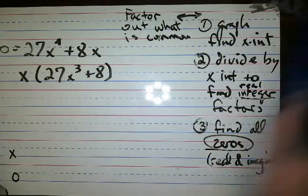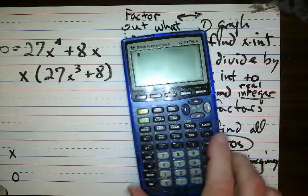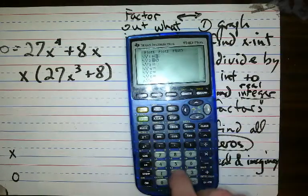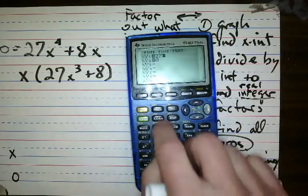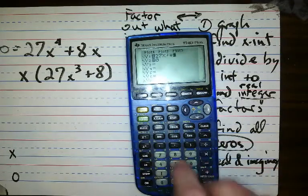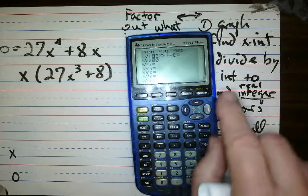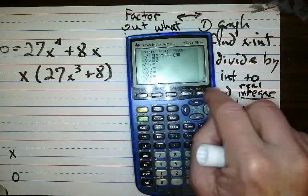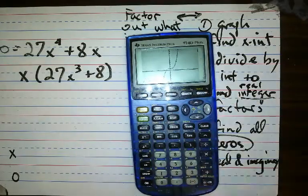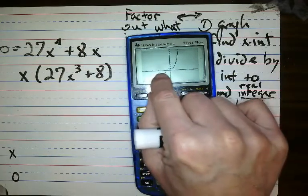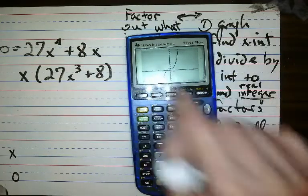Now this one — you just graph it: x to the third plus 8. And what we're interested in is where does that cross the x-axis? And it crosses the x-axis over here between 0 and negative 1.